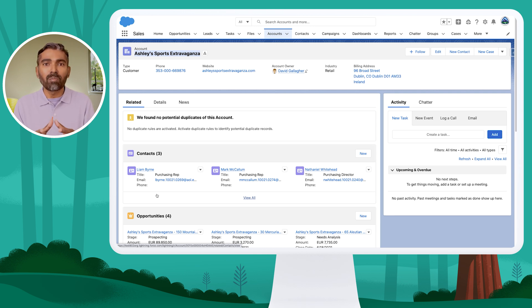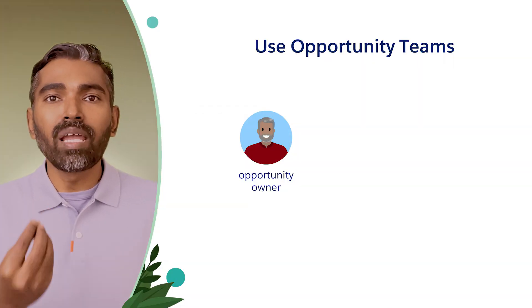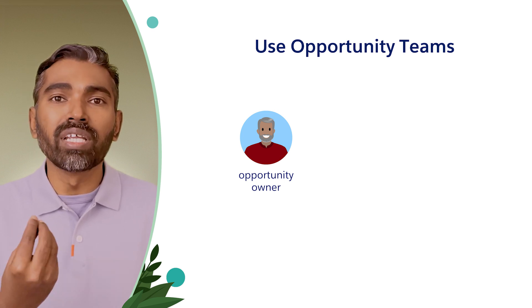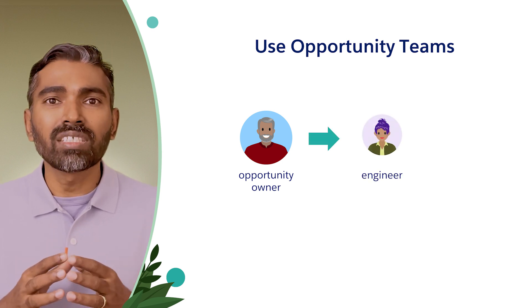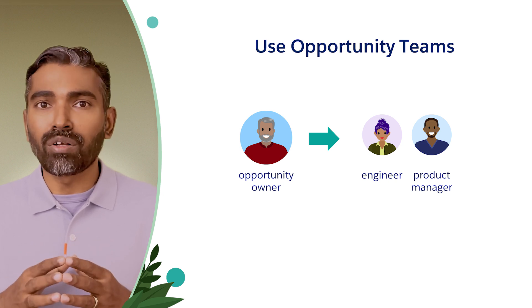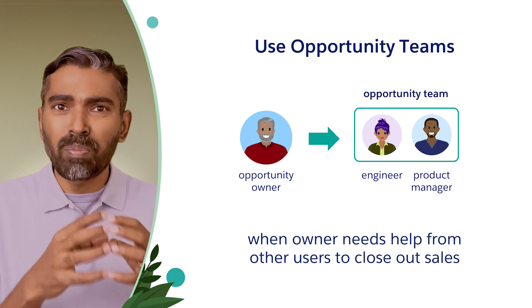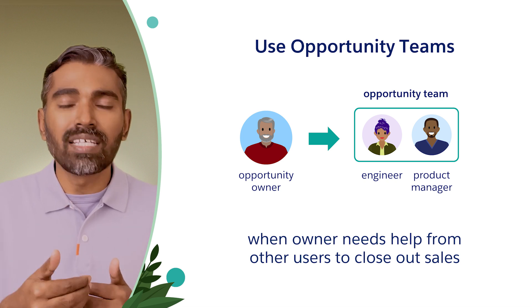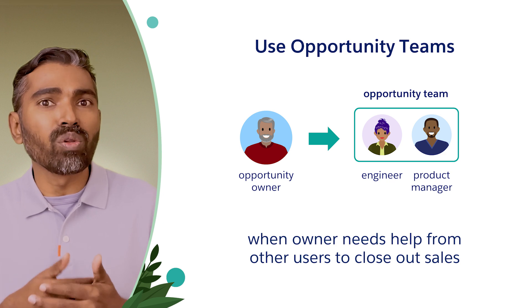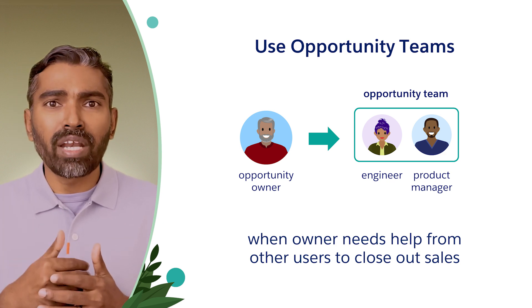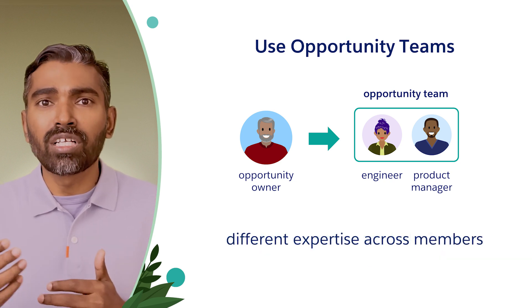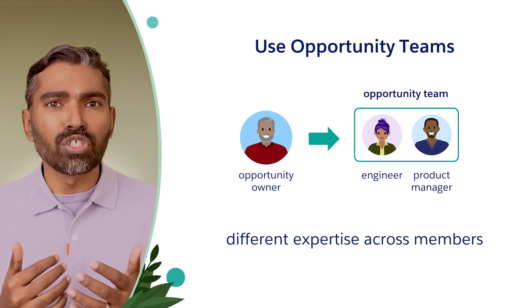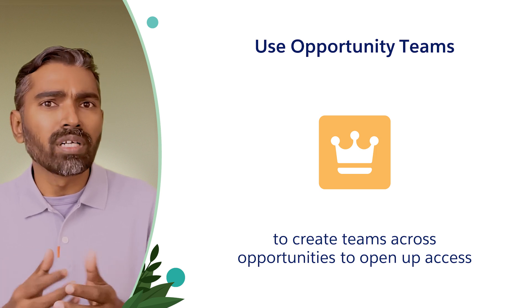This makes for good collaboration and teamwork, giving them access to records that matter to the specific account. In a similar way, you can also enable opportunity teams and use them similarly to account teams. For a sales opportunity, the owner needs help from additional sales engineers and product managers to help close that particular sale. You can open up access to that specific opportunity, bring members to the opportunity team, and tell them what role they will play — a product manager as an expert for customer questions, or an engineer to show demos and walk through product features.